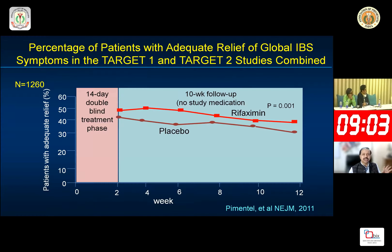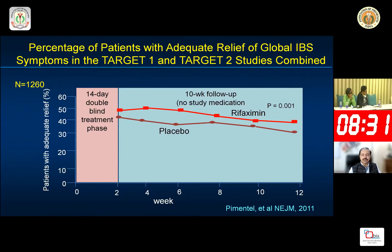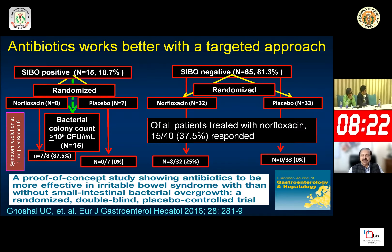The famous TARGET study by Mark Pimentel, published in the New England Journal of Medicine, found that if you treat 100 patients with non-constipating IBS, 40 percent respond to rifaximin whereas 30 percent respond to placebo. Only about 40 percent respond because that study did not select patients for bacterial overgrowth. Those who have bacterial overgrowth will respond to rifaximin; those who do not will not respond.